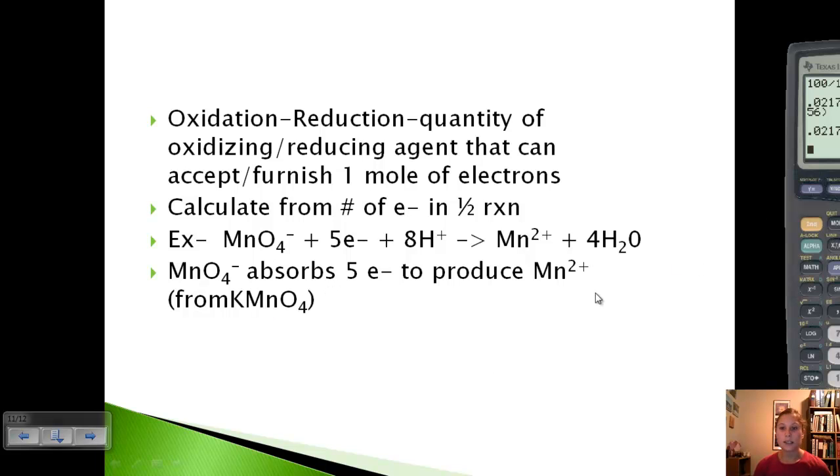For every one KMnO4, we've got 5 electrons. KMnO4's molar mass is about 158, and we divide it by 5 because of the 5 electrons. That gives an equivalent mass of about 31.6. Same idea as with the hydrogens, but we're looking at electrons from the half reaction.